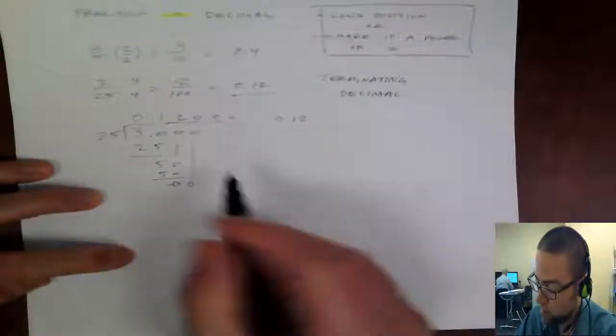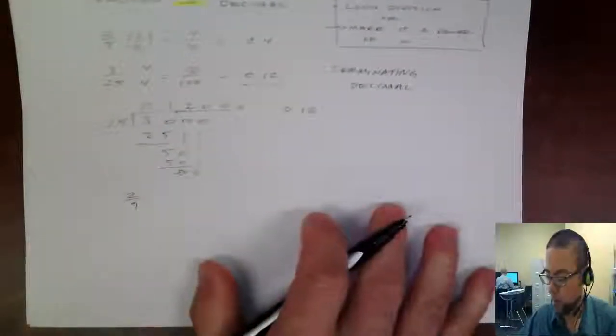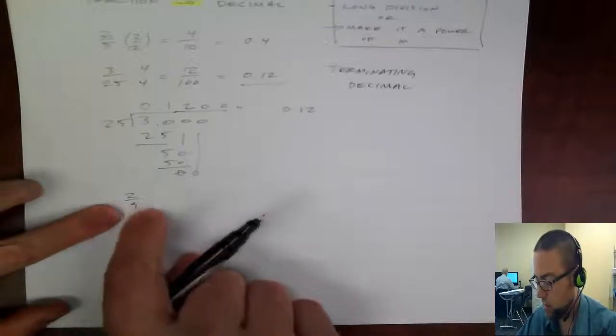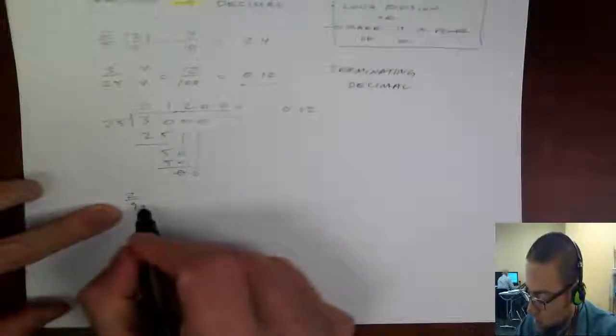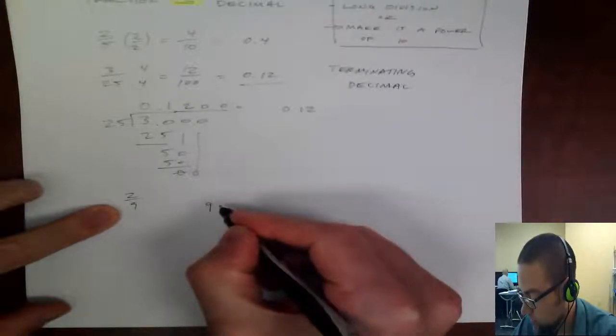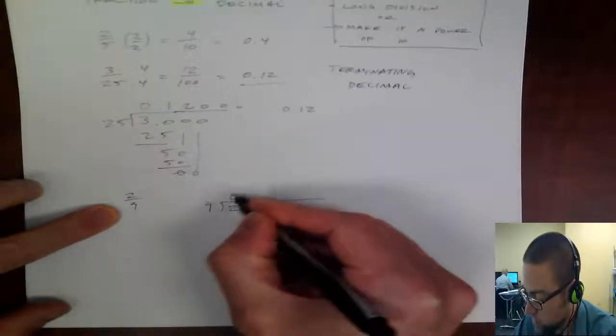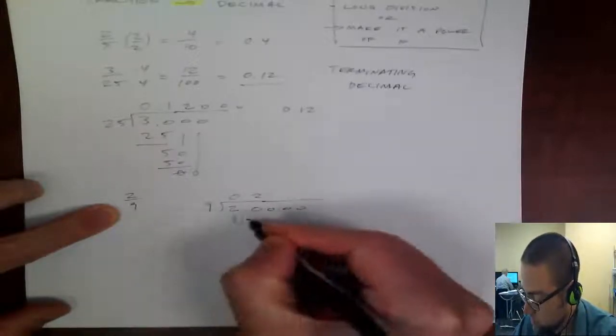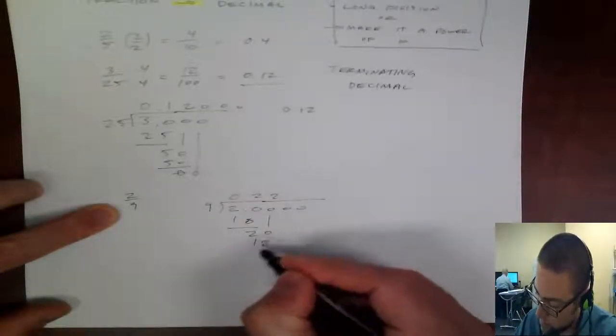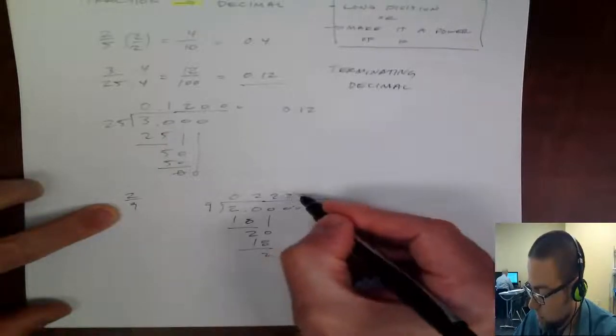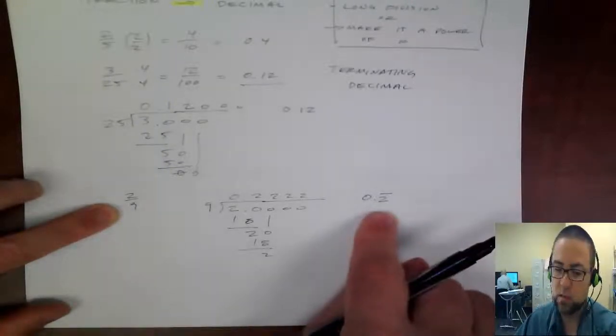So what happens if we get a type that does not turn into a power of 10? So how about 2 9ths? Well, I can't multiply any whole number times 9 to ever get a power of 100. So what I do is a long division. So I'd say 9 goes into 2 0 times, and then it goes into 20 2 times, which is 18. Subtract, I get a 2, bring down a 0. 9 goes into 20 2 times, and you see it will repeat on and on, and it will always be a 2. So this is 0.2, and then we just put a bar over it to say it repeats on and on.